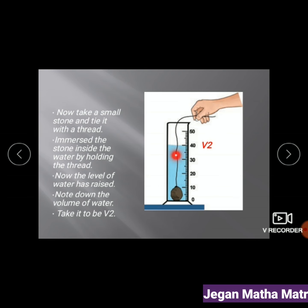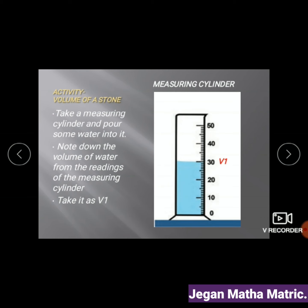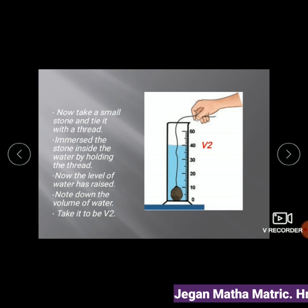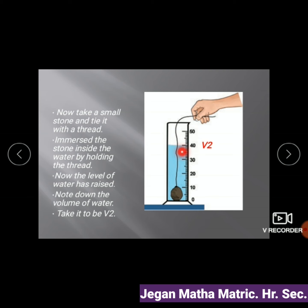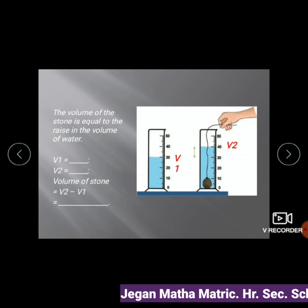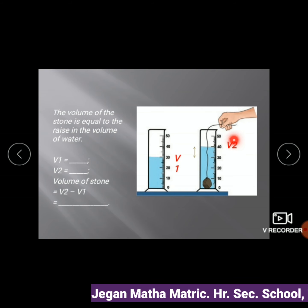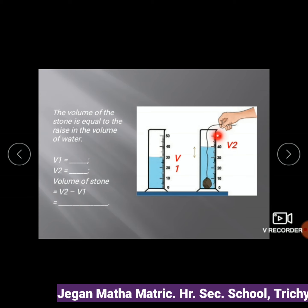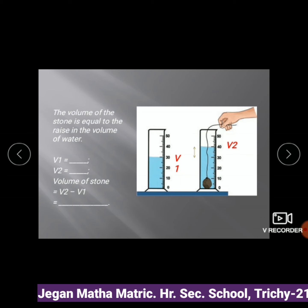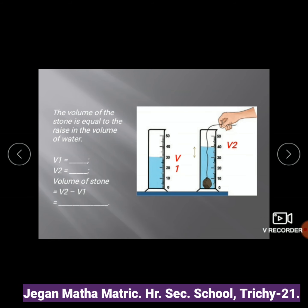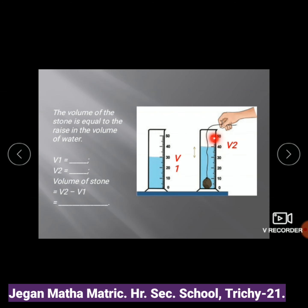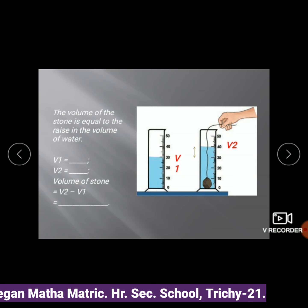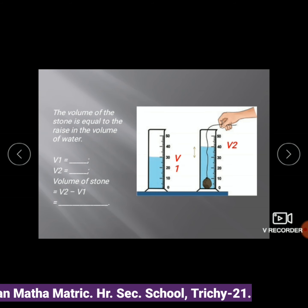After immersing the stone, the level of water has risen. Before immersing, the water level was 30 (V1 = 30). After immersing the stone, the water level is 40 (V2 = 40). Therefore, the volume of the stone = V2 − V1 = 40 − 30 = 10 ml.